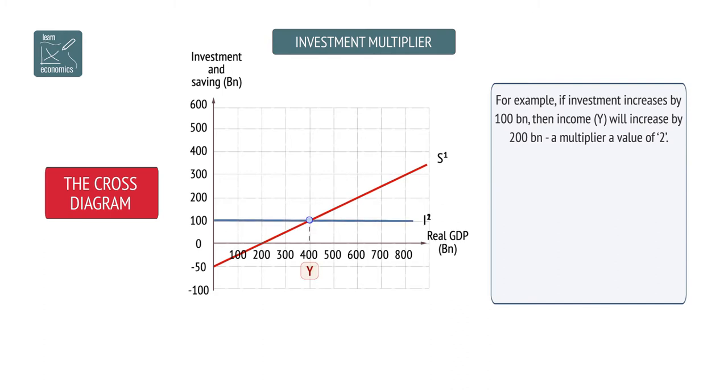For example, if investment increases by $100 billion, income will increase by $200 billion, which gives the multiplier a value of 2.